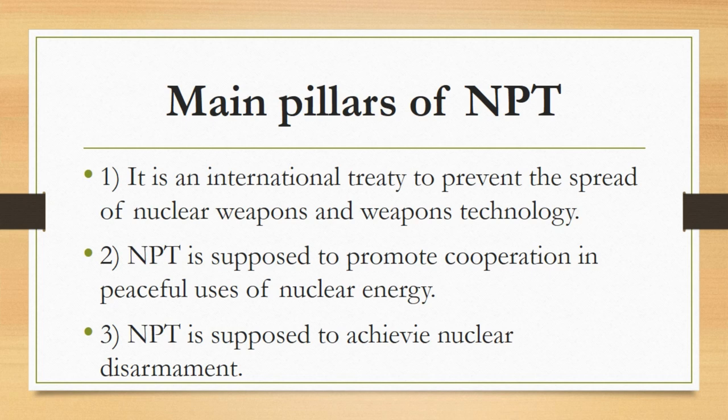Third, the function of the Nuclear Non-Proliferation Treaty is nuclear disarmament. This is the main goal of NPT, which means the broader purpose of this treaty is the complete reduction of nuclear weapons from the world. These are the three main functions of NPT.